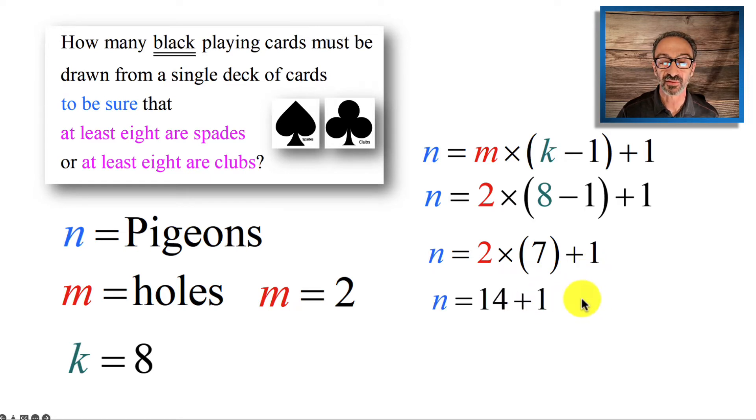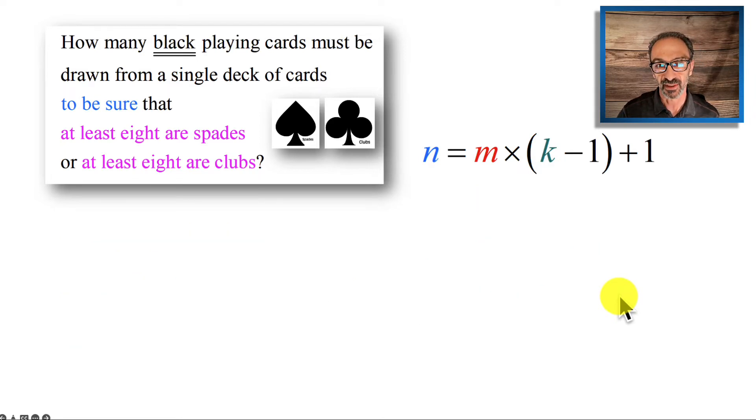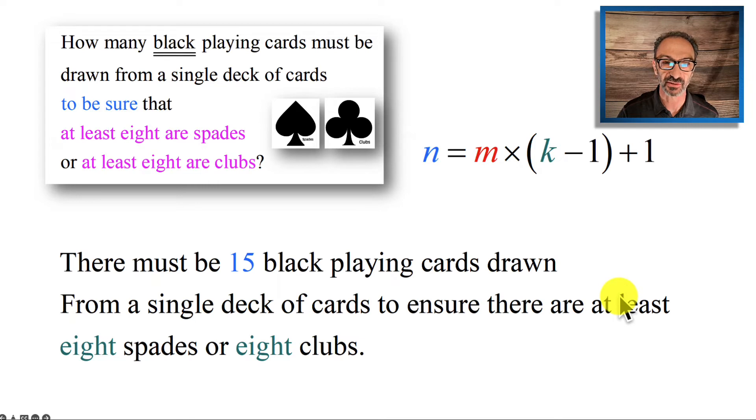Two times seven is 14 plus one is 15, and you need to take 15 cards. So that's the formula and that's the answer. There must be 15 playing cards.